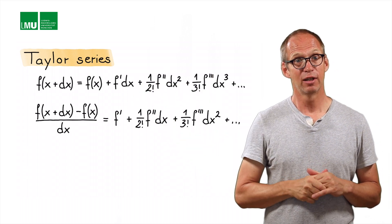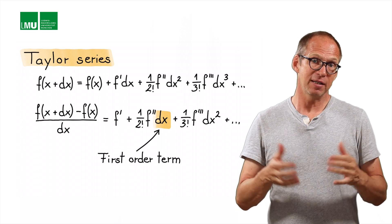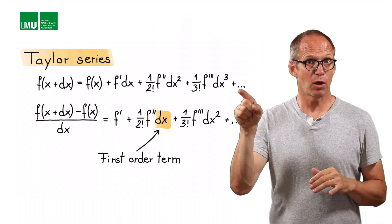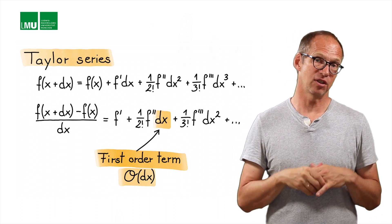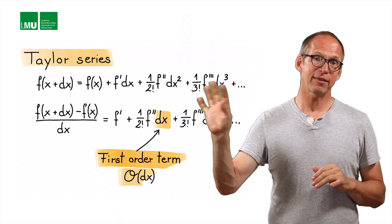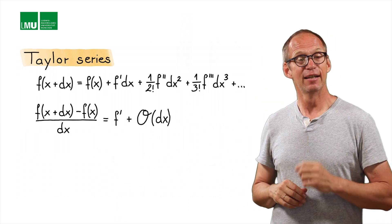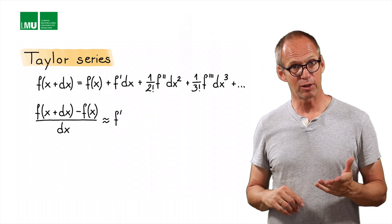The terms actually start with order one. We describe that with O of dx, which is descriptive of the order terms. If we neglect those terms, as we've seen before, we have to replace the equal sign by an approximate sign.